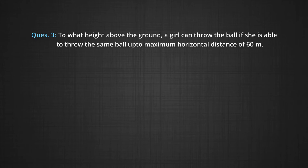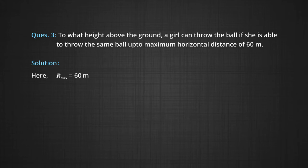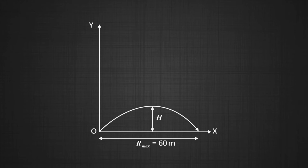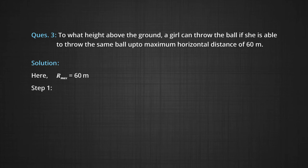Question 3: To what height above the ground can a girl throw a ball if she is able to throw the same ball to a maximum horizontal distance of 60 m? Given: R_max = 60 m, because the ball follows a projectile path. In step 1, R_max = U²/g, so U²/g = 60.